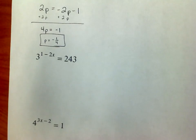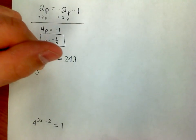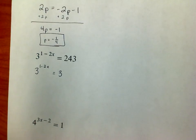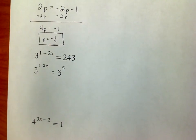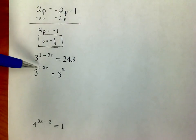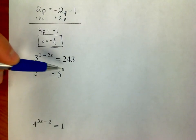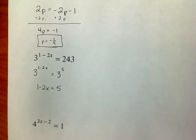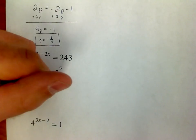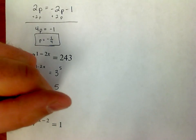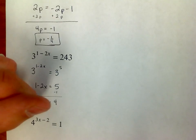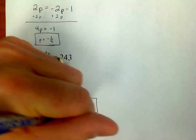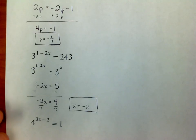So in that case, what I want to first do is rewrite this as the same base. 3 raised to a power on the left. So let's use 3 raised to a power on the right, and it's 3 to the fifth power. And now it looks like the first problem. If 3 to the 1 minus 2x is the same thing as 3 to the fifth, then that means that 1 minus 2x must be the same thing as 5. And so let's subtract 1 from both sides, and that gives me a negative 2x on the left and a positive 4 on the right. Divide by negative 2. Being careful about my negative signs here, x must be a negative 2.